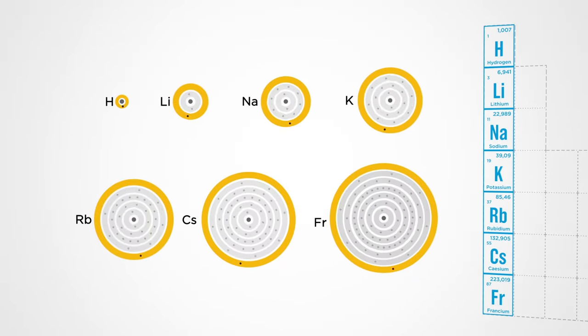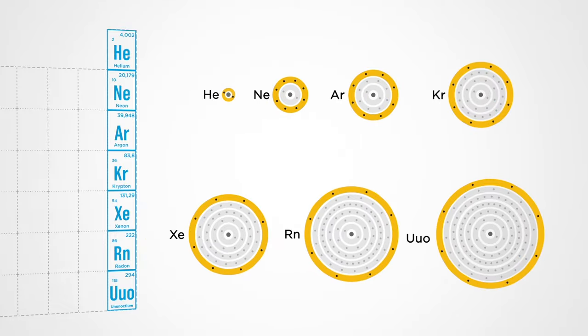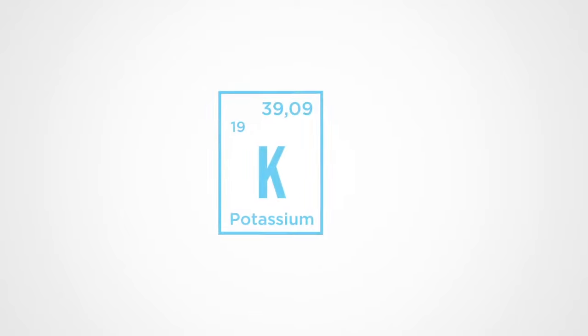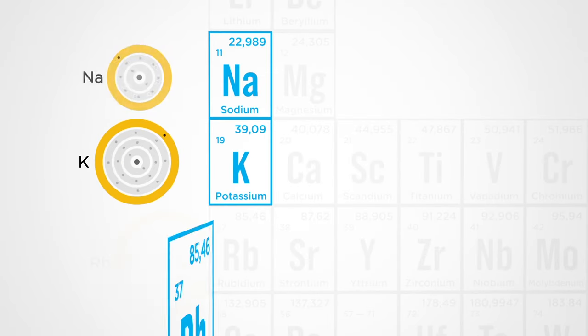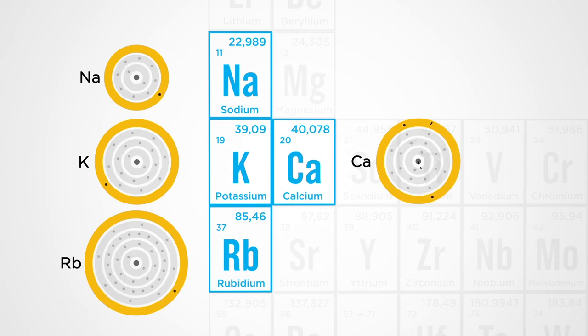In the first column of the table we have the elements that have a single electron in the outer layer, and in the last column we have those who have filled this layer. That's why each chemical element in the periodic table has a very well-defined neighborhood. Above and below, it has elements with the same distribution of electrons and very similar properties. And on its right, it has an element that has one electron and one proton more, and therefore has different properties.